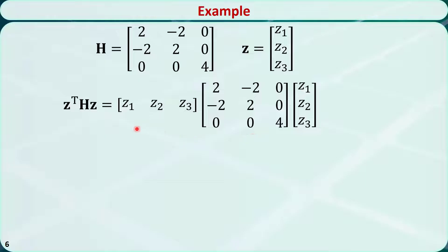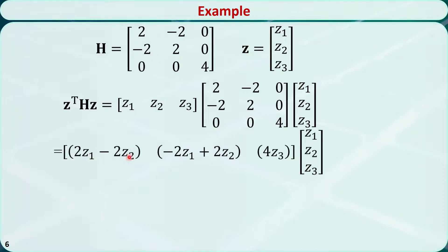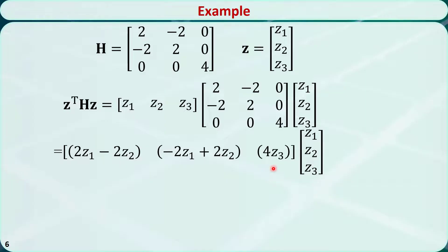We calculate the product of the first two matrices. This is a 1 by 3 matrix, and this is a 3 by 3 matrix, so the result will be a 1 by 3 matrix. The first element is the sum of this row times the first column: 2Z1 minus 2Z2. The second element is minus 2Z1 plus 2Z2. The third element is 4Z3. Now let's multiply this row by this column — this is the result.